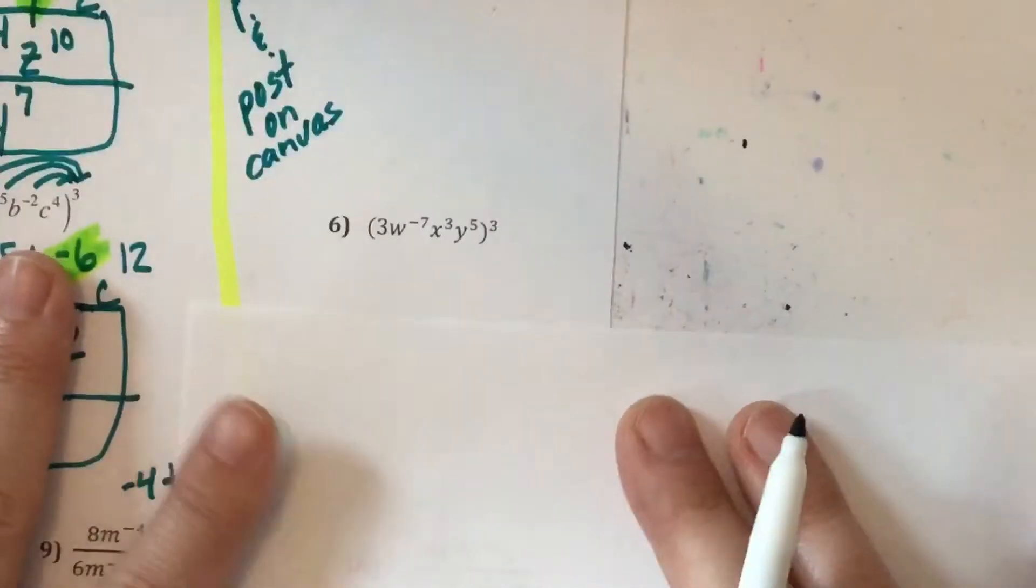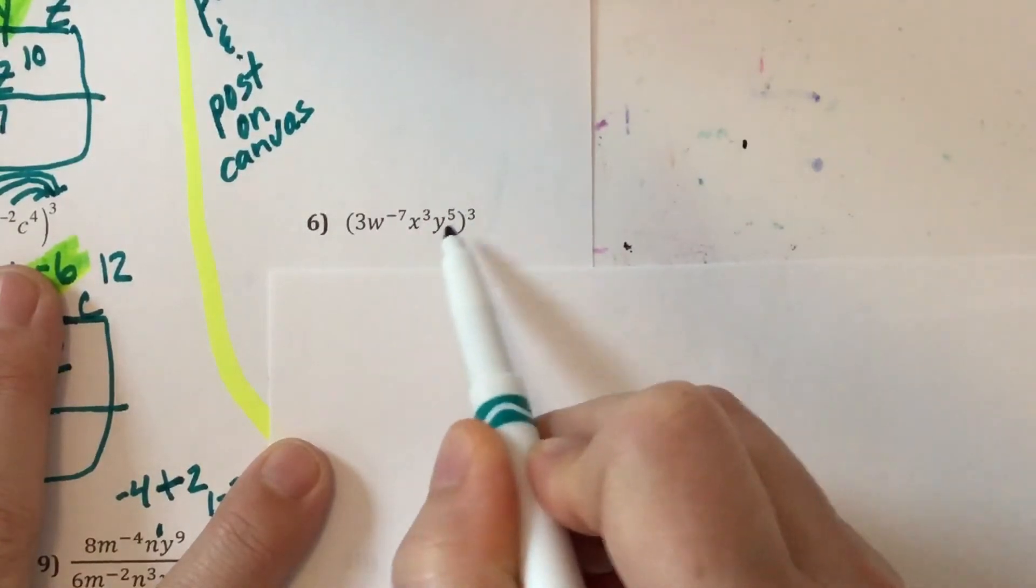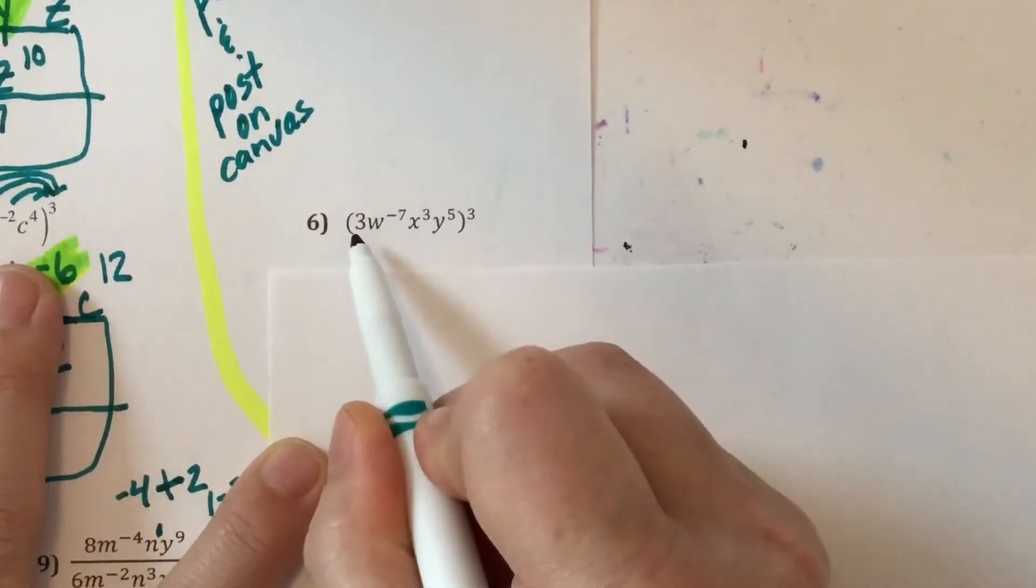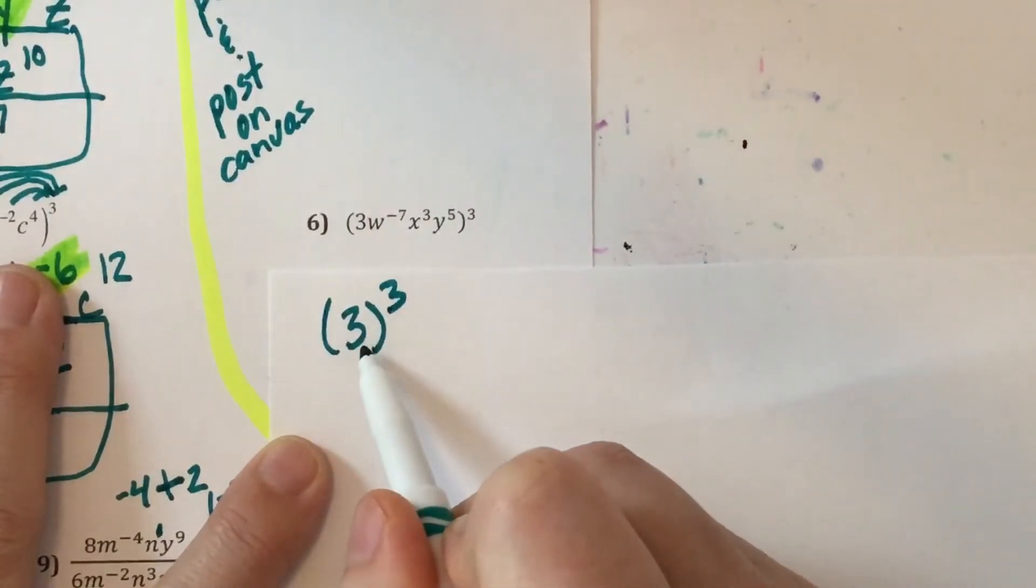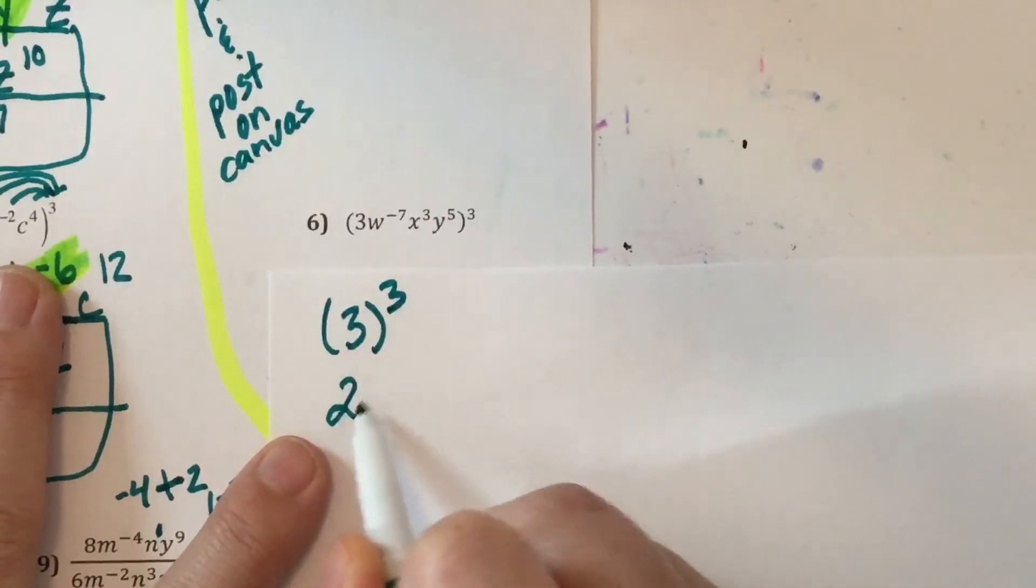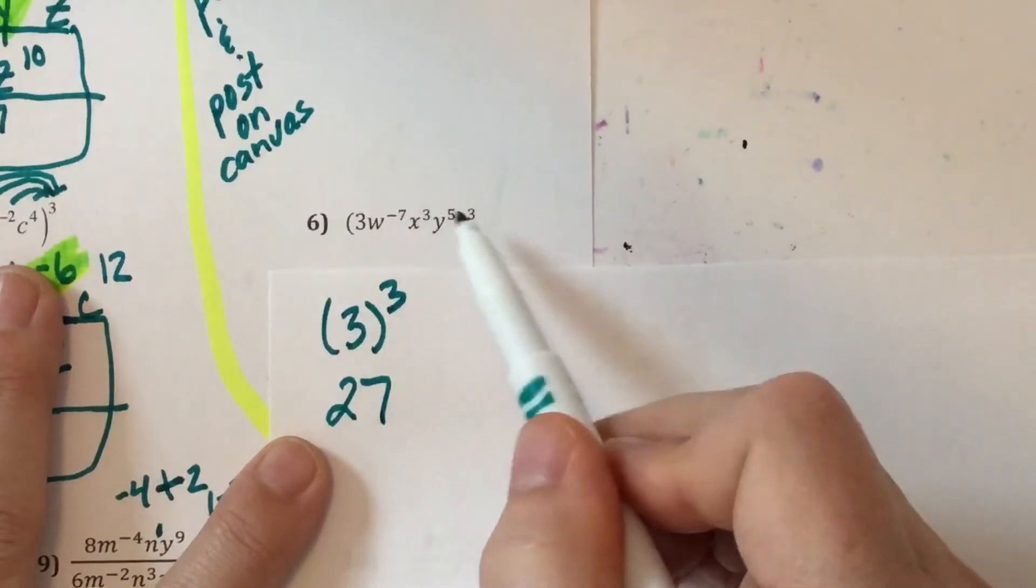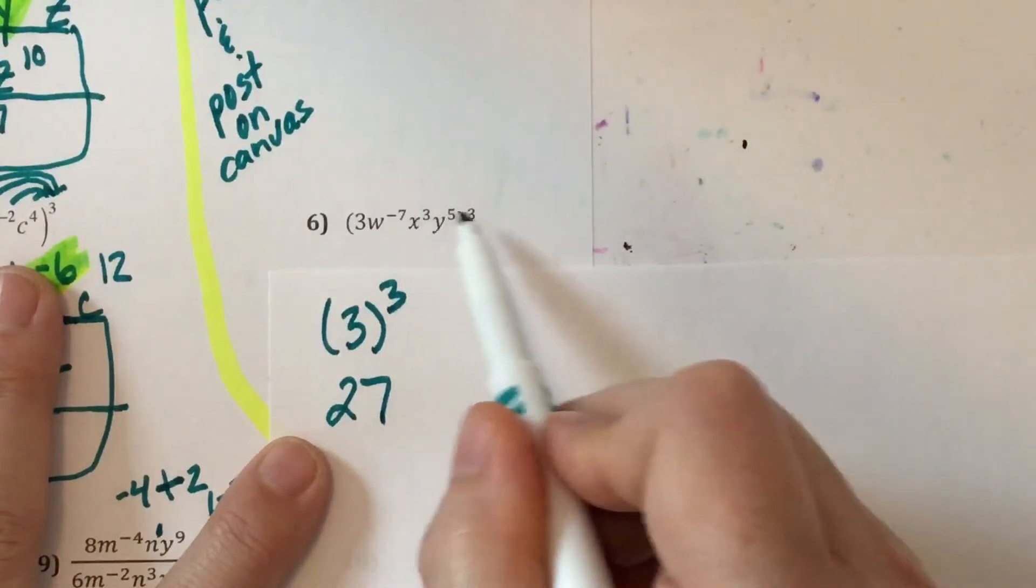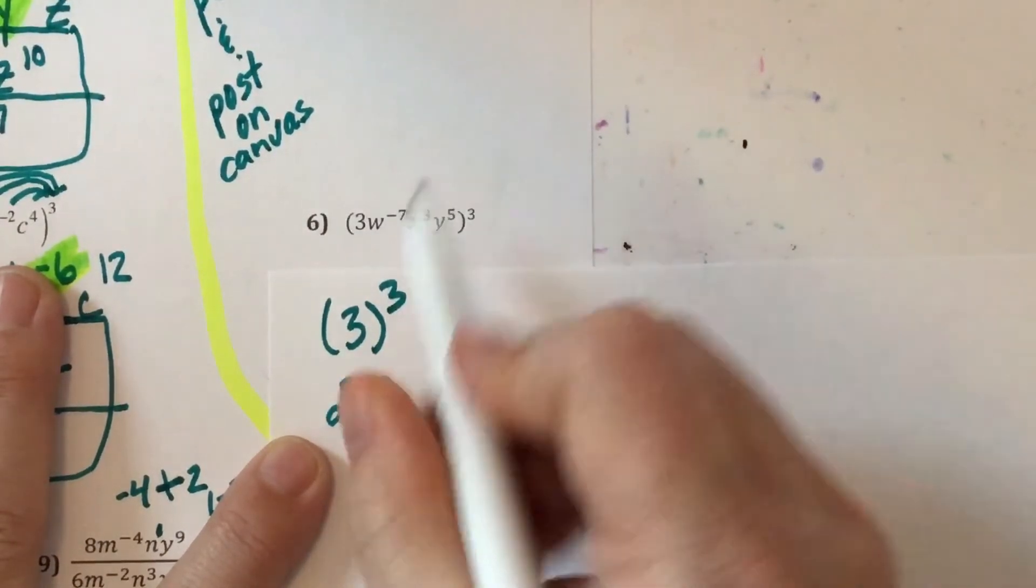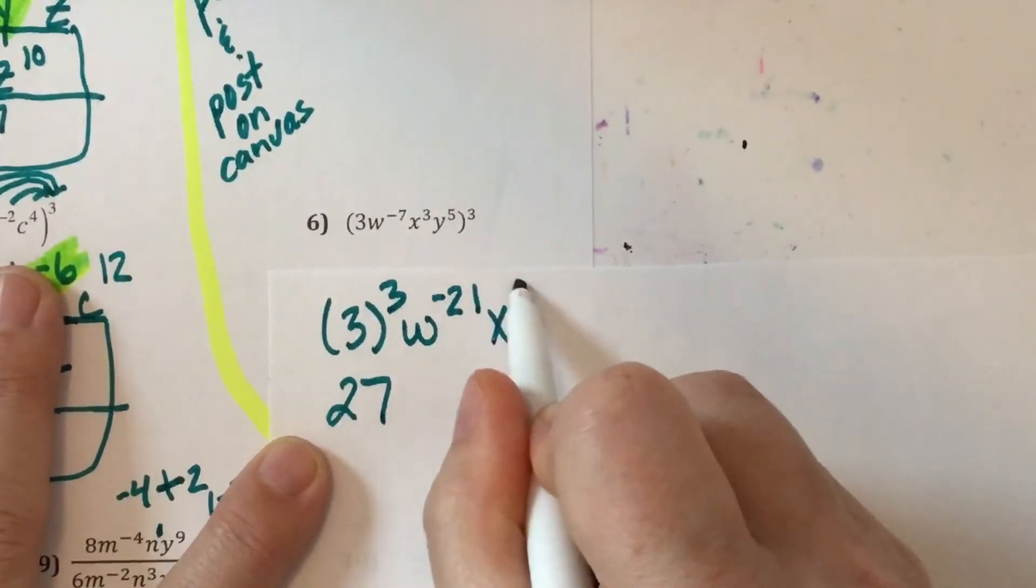Okay number 6. So everything is getting raised to that outside exponent. Now this 3 is not an exponent so that 3 is getting raised to the third power. 3 times 3 times 3 which is 27. But these guys are all getting raised to the outside exponent and they're all exponents so that's the third line of the song. If there's a power to a power then you multiply. So negative 7 times 3 is negative 21. 3 times 3 is 9 and 5 times 3 is 15.